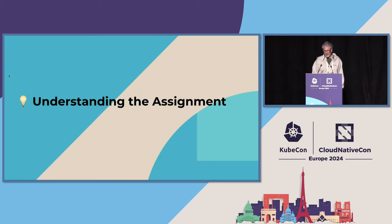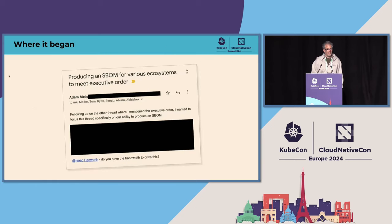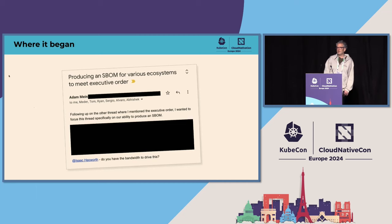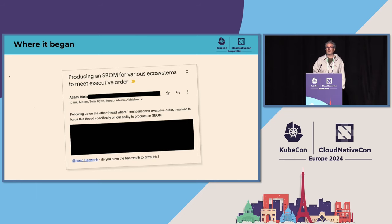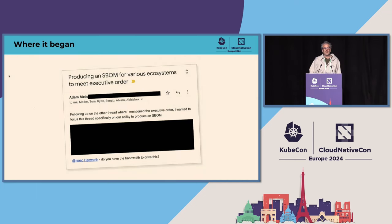Let's get started — understanding the assignment. I joined Google a few years ago, and within a week or two of joining, I received an email with the subject line 'producing an SBOM for various ecosystems to meet the executive order.' It had this ominous line at the bottom: 'Isaac, do you have bandwidth to drive this?' I was a couple of weeks into Google and, apart from training, turns out I did have bandwidth to drive it.